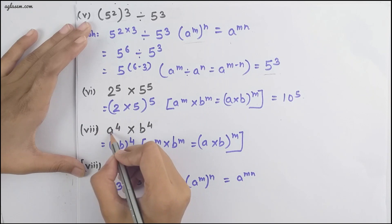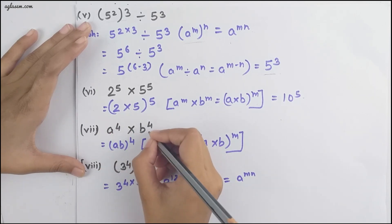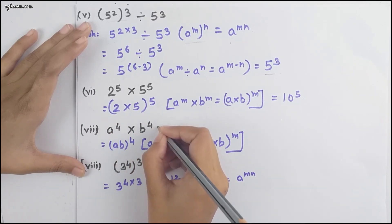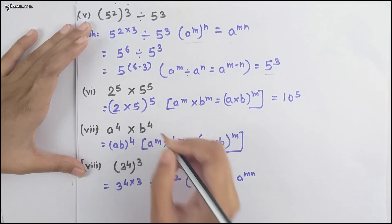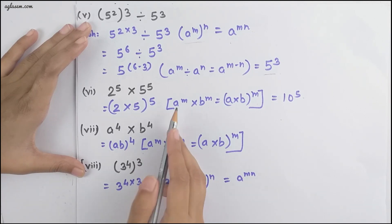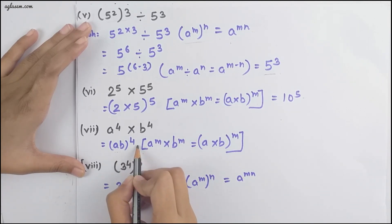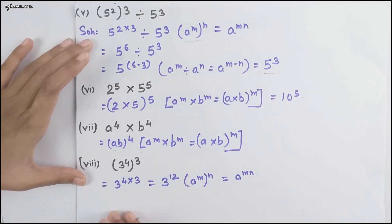Moving to the next part, we have a raised to the power 4 into b raised to the power 4. Again using the same formula — same powers, different bases — we get (a×b) raised to the power 4.